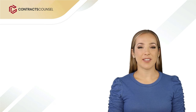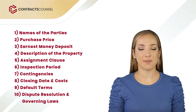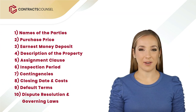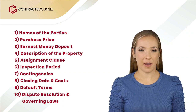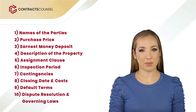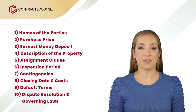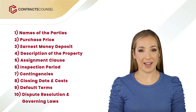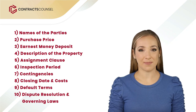What to include in your wholesale contract: here are some common terms you will find. One, names of the parties — clearly identify the seller, who is the property owner, and the buyer, the wholesaler. Two, purchase price — this section states the agreed upon purchase price of the property. Three, earnest money deposit — this describes the amount of money needed upfront by the wholesaler, where it is held, and the terms under which it can be returned or forfeited.